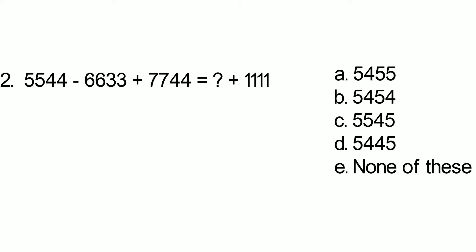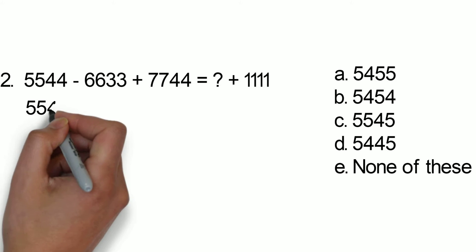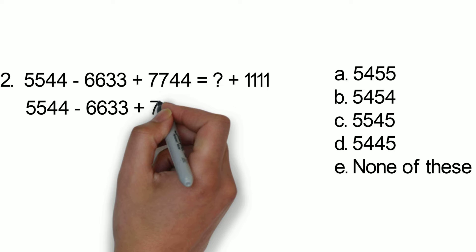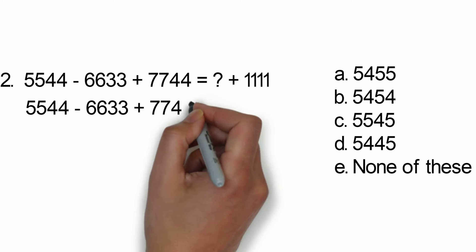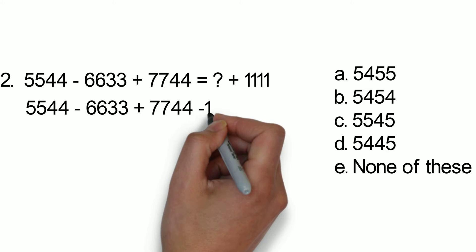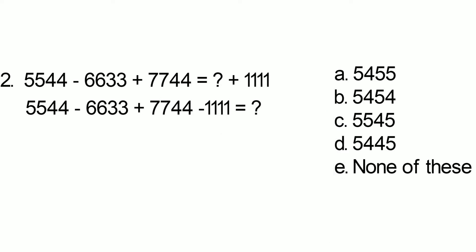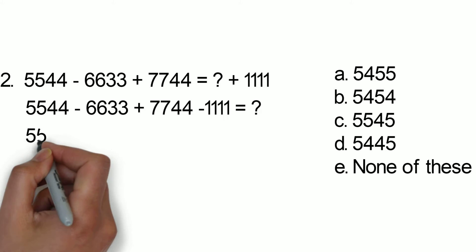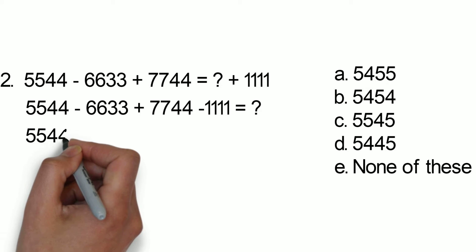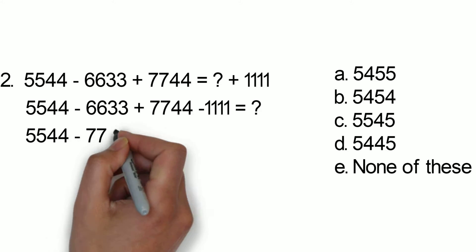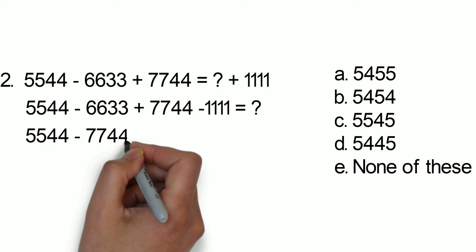So now, right-side will have 1111 and left-side will have minus 1111 out. Minus 1111 equals to question mark. If we move on, then minus 633 minus 1111 add together and minus 7774 out.